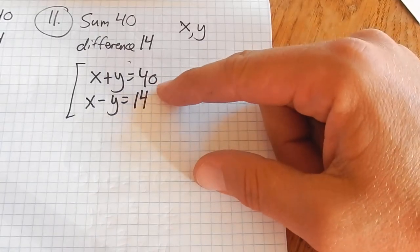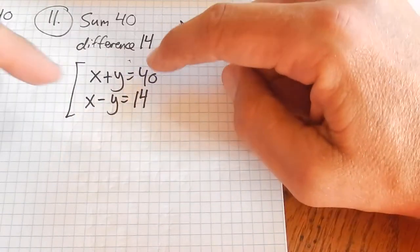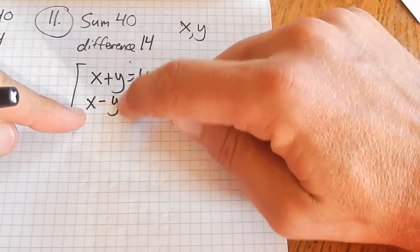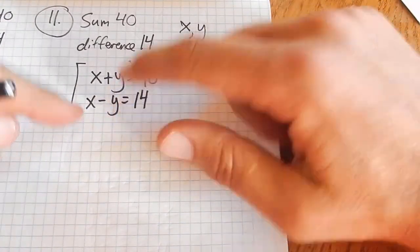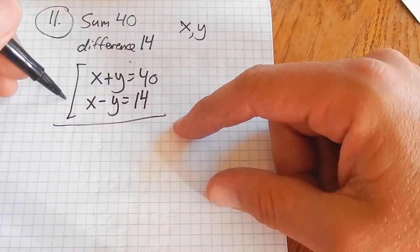To solve this system, I see elimination. If I add the equations together, the y's are going to cancel each other out. The y's will go away, and I'll get it in terms of one single variable. So I'm going to add these equations together.